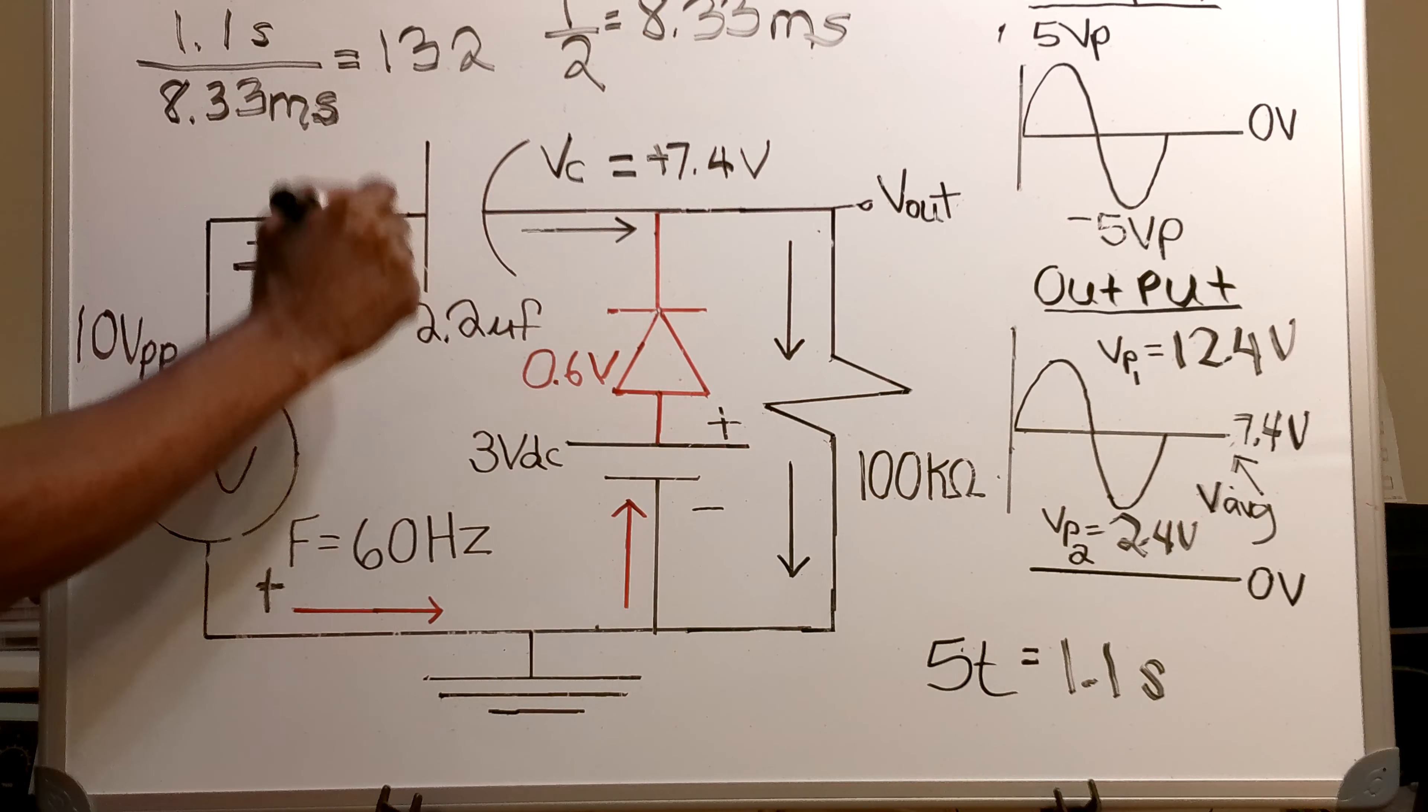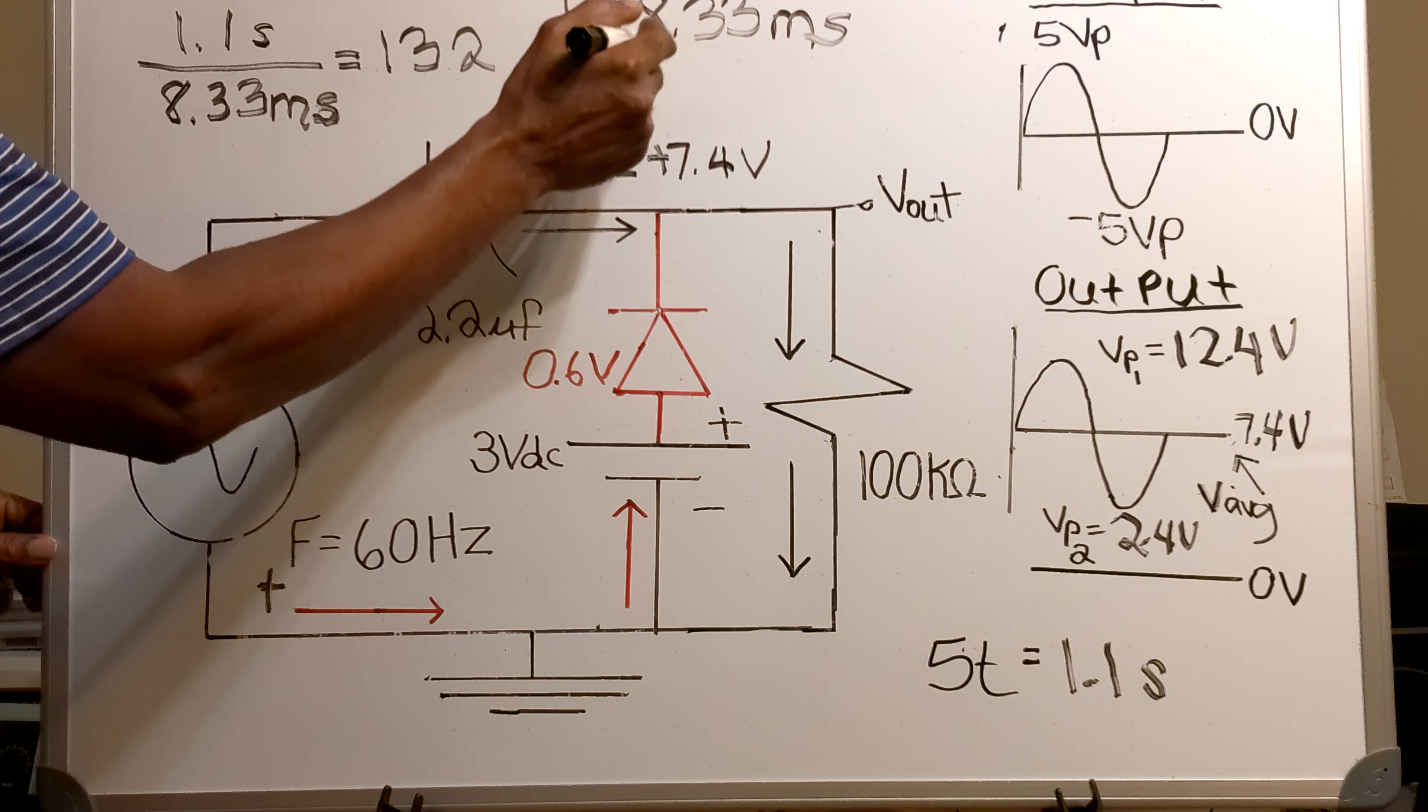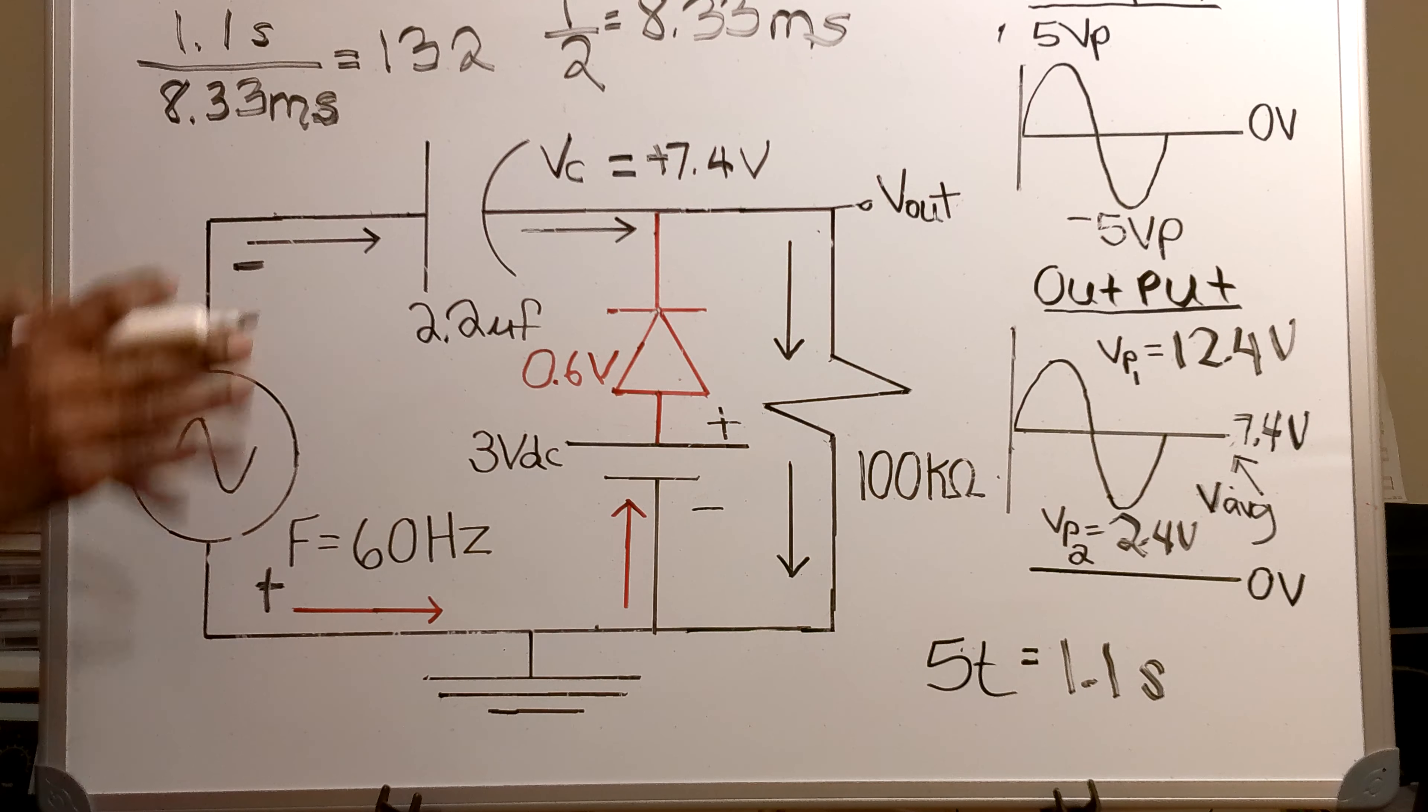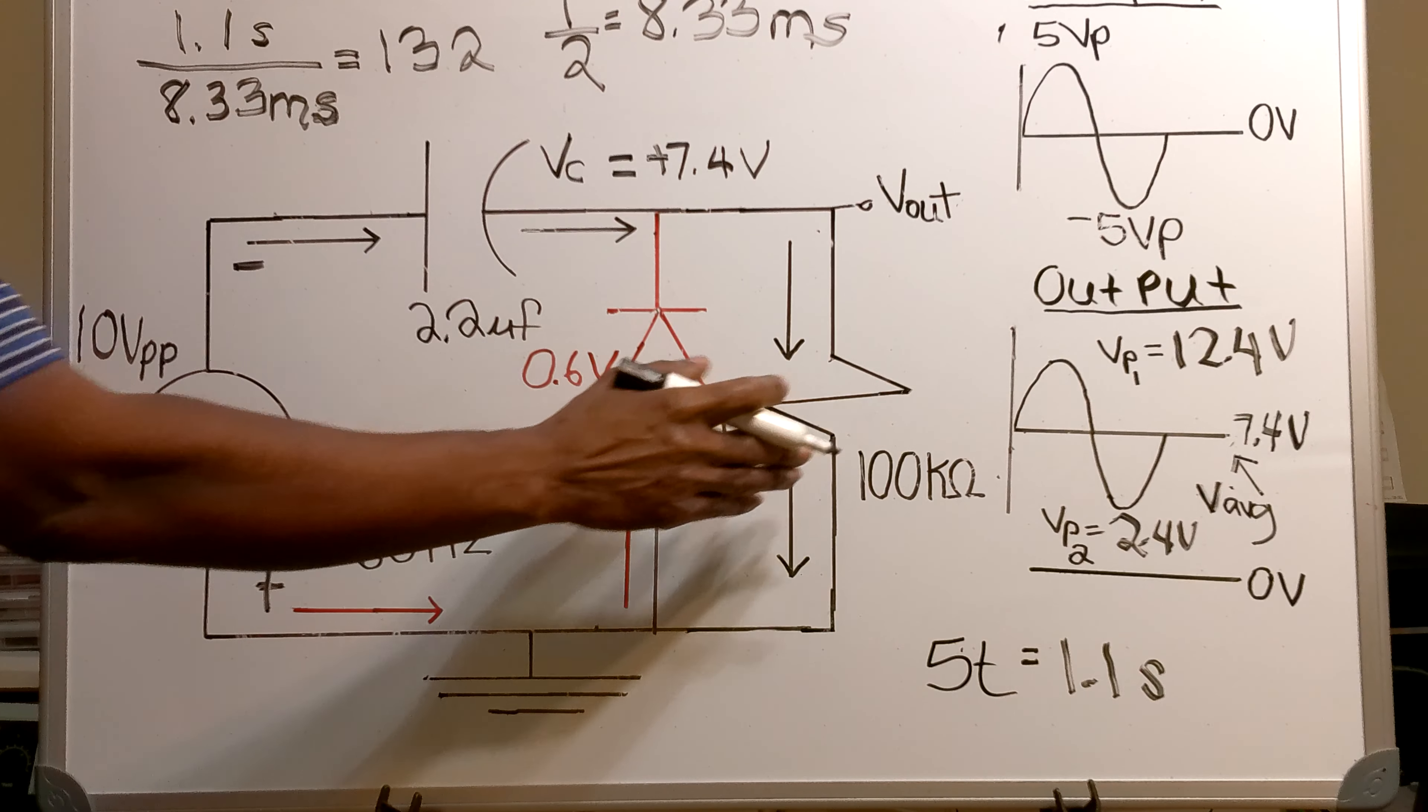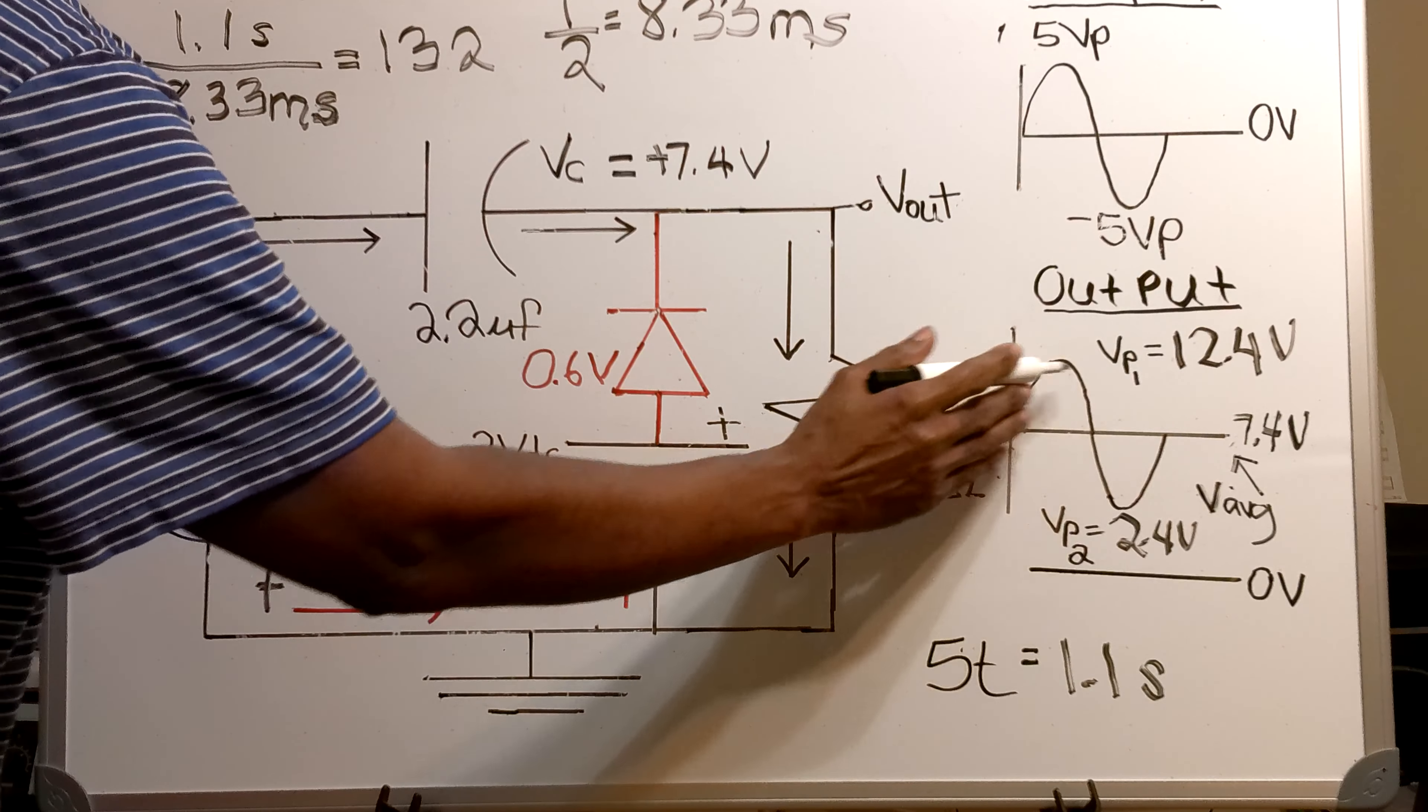Now what that means is that there is enough of a difference between the charge time of the capacitor because of the 100k and the half cycle which is 8.33 milliseconds of the input.